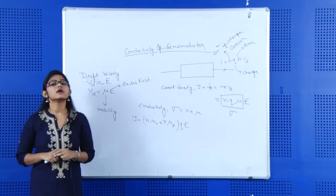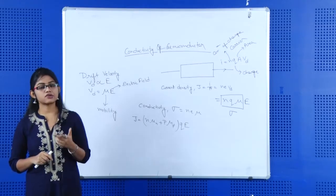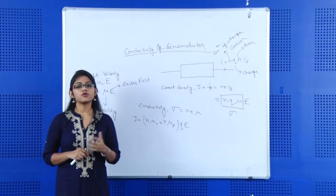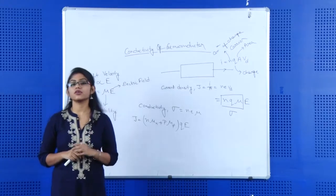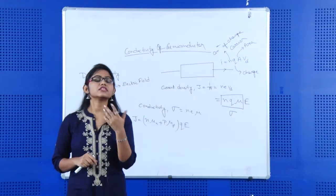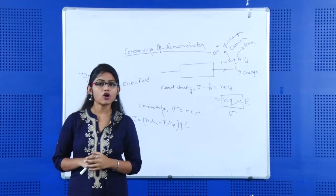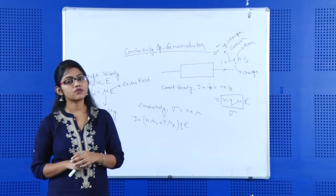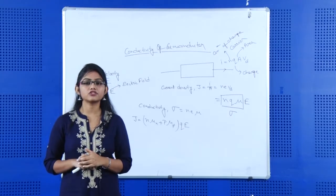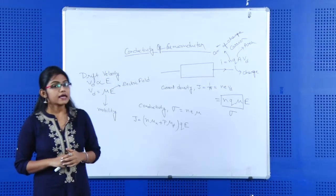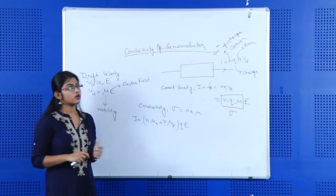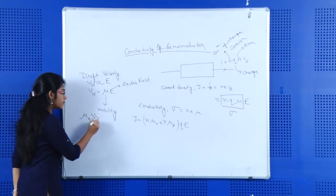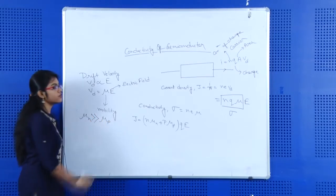In the case of a semiconductor, two types of charge carriers are present — one is electron and another is hole. What will be the mobility for electron and hole? Are they the same? Basically, mobility is inversely proportional to the mass of the particle, and as we know, the mass of the electron is very less than the mass of the hole. So the mobility of electron, mu_n, will be much greater than the mobility of holes.